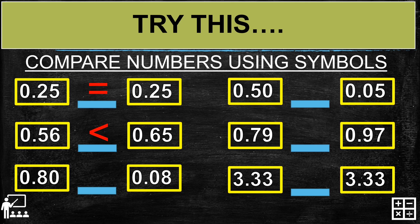Next, 80 hundredths and 800 thousandths — 80 hundredths is greater than 800 thousandths, so we are going to use greater than. Next, 50 hundredths and 5 hundredths — 50 hundredths is higher than 5 hundredths, so we use greater than. Next, 79 hundredths and 97 hundredths — 79 hundredths is lower than 97 hundredths, so we are going to use less than.